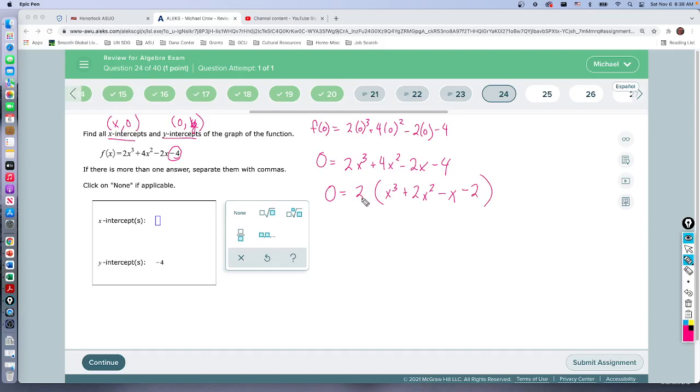Then I could divide both sides by two just to kind of not have to worry about this. I can't just drop it but I can divide both sides by two, this becomes one. So now I get zero equals x cubed plus two x squared minus x minus two.